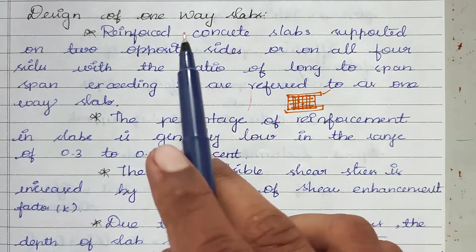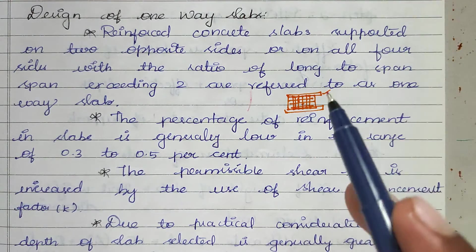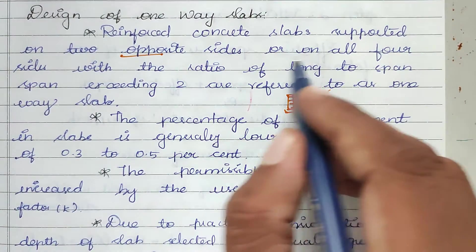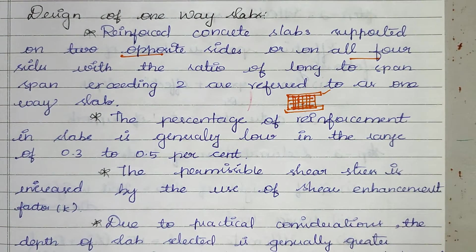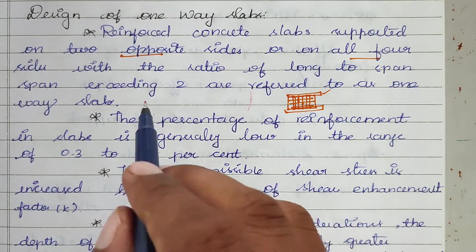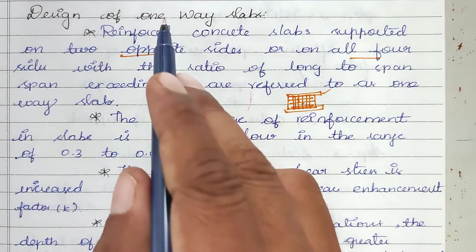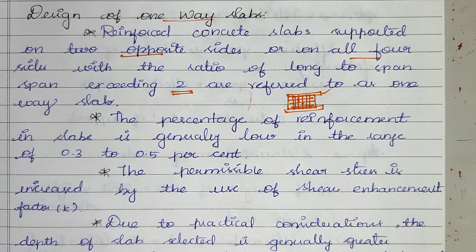One-way slab is a reinforced concrete slab supported on two opposite sides or four sides where the ratio of longer to shorter span exceeds 2.